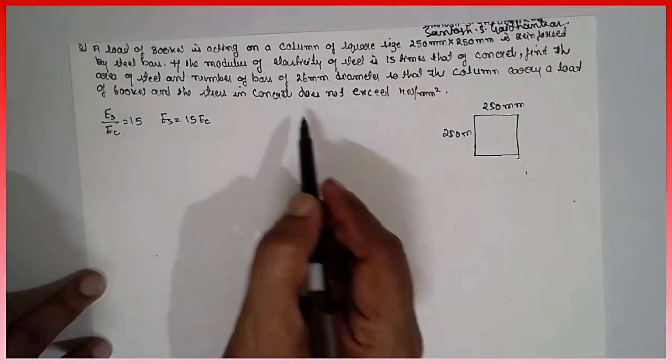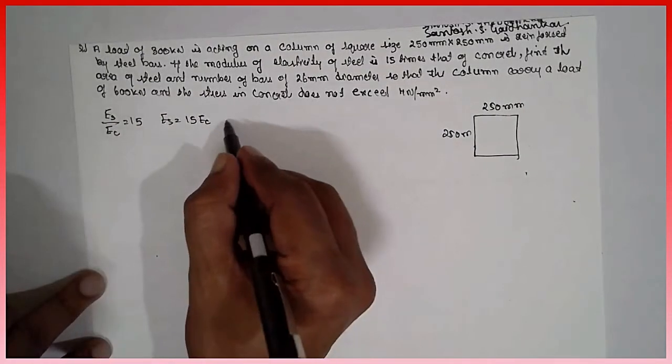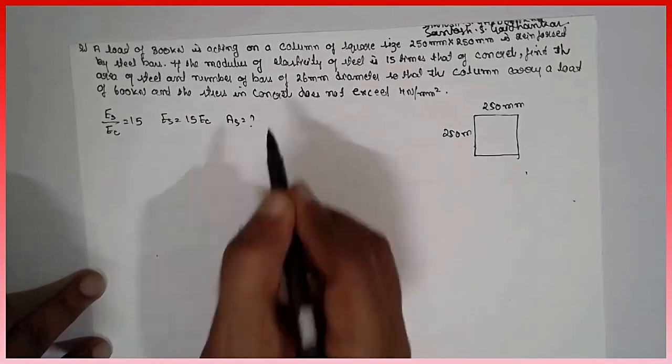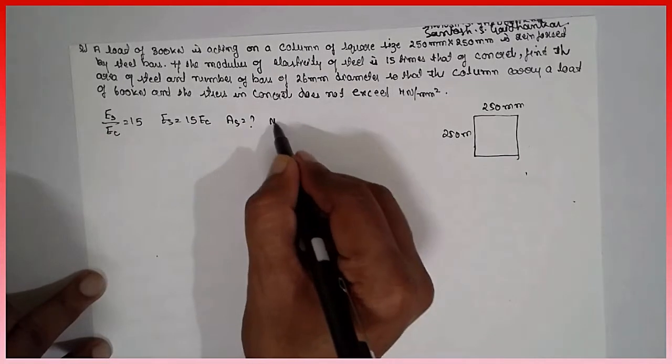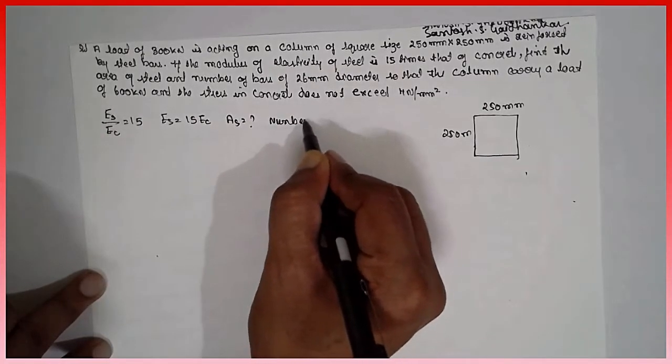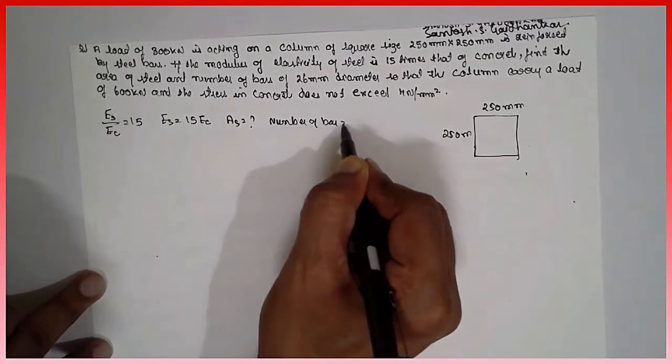You find the area of the steel. We have to find out the area of the steel, we are going to find out. And number of bars, number of bars we are going to find out.